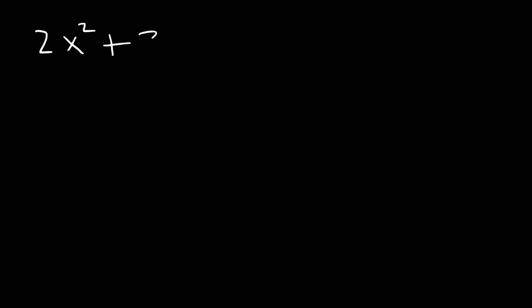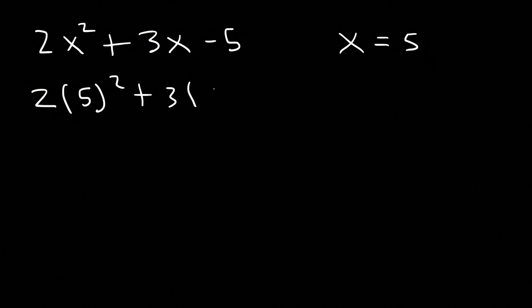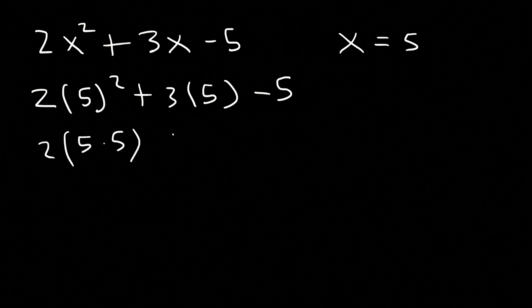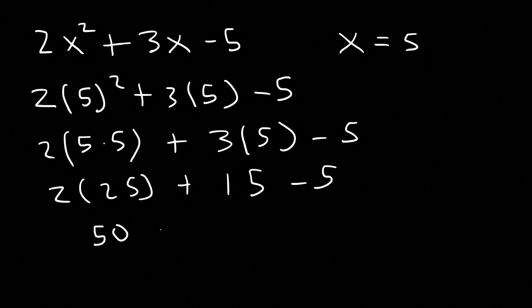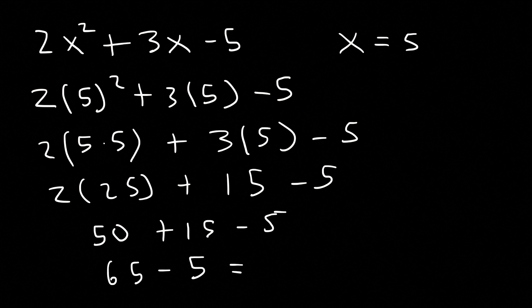Here's the next example: evaluate 2x squared plus 3x minus 5, where x equals 5. Begin by replacing x with 5. 5 squared is 5 times 5, which is 25. 3 times 5 is 15. 2 times 25 is 50. So we have 50 plus 15 minus 5. 50 plus 15 is 65, and 65 minus 5 is 60. That's the final answer.